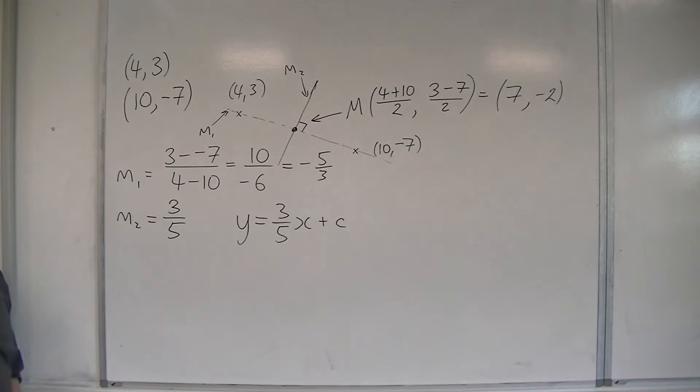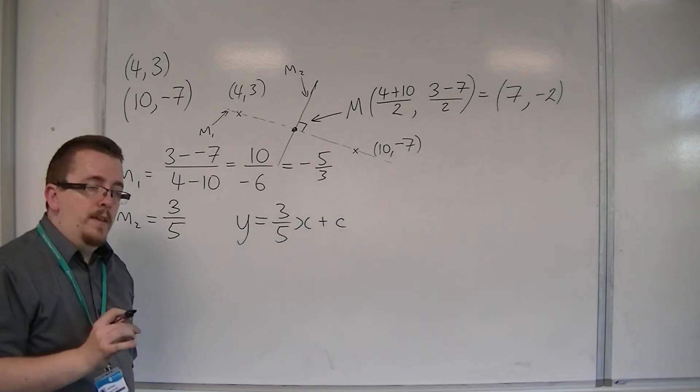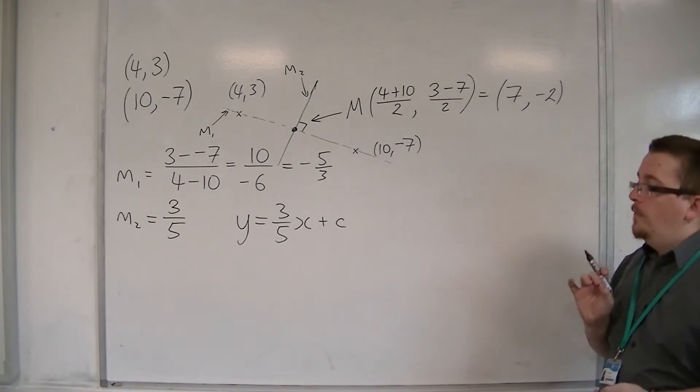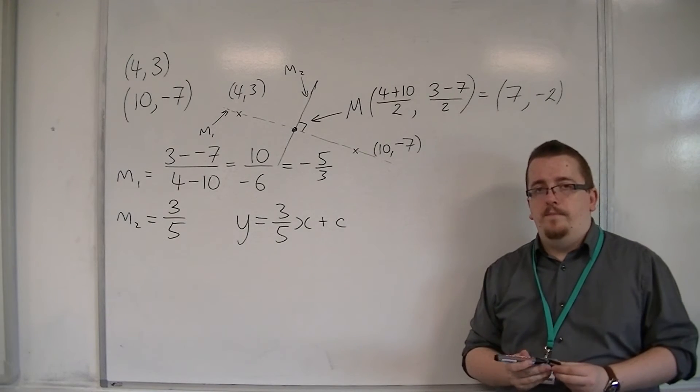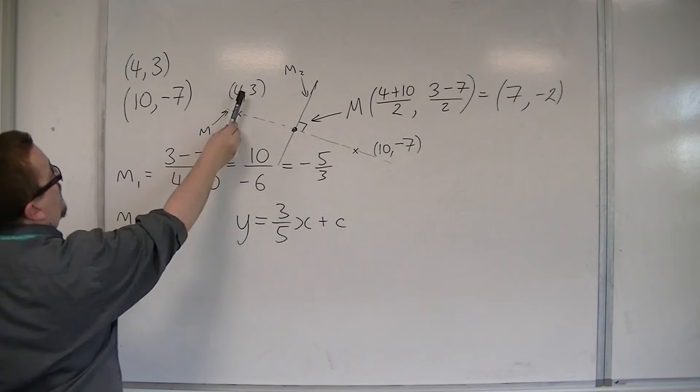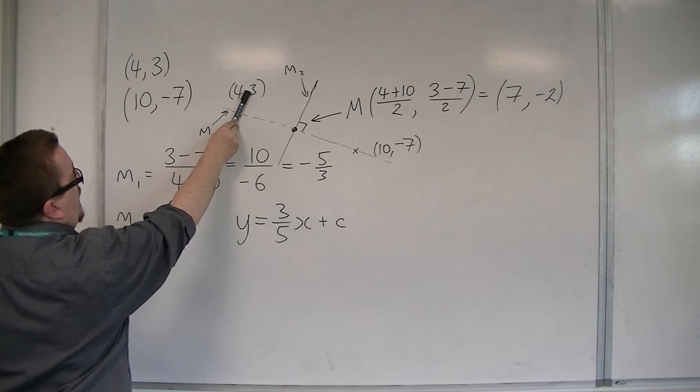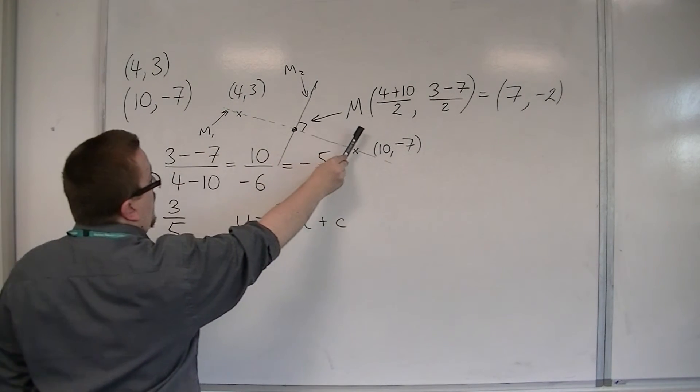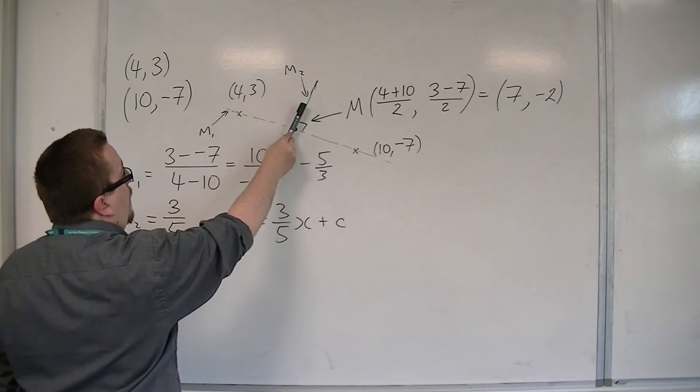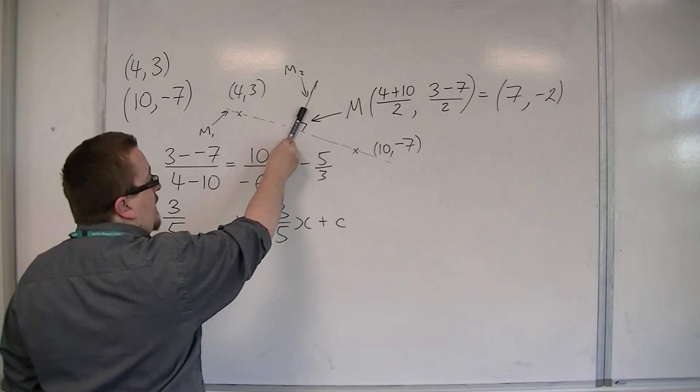Now I just need to work out what the value of c is. It is very important at this stage to know which point I can substitute in. If I substitute in 4, 3, that will give me this line. If I substitute in 10, minus 7, I will get that line. I must substitute in the midpoint, in order to get the correct line. So, I substitute in 7, minus 2.